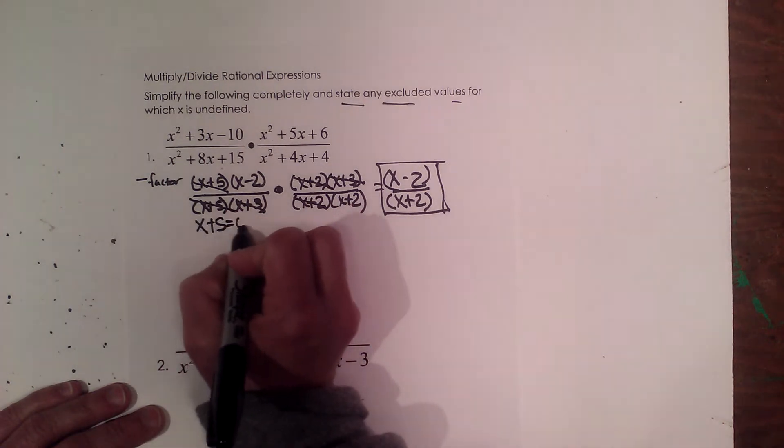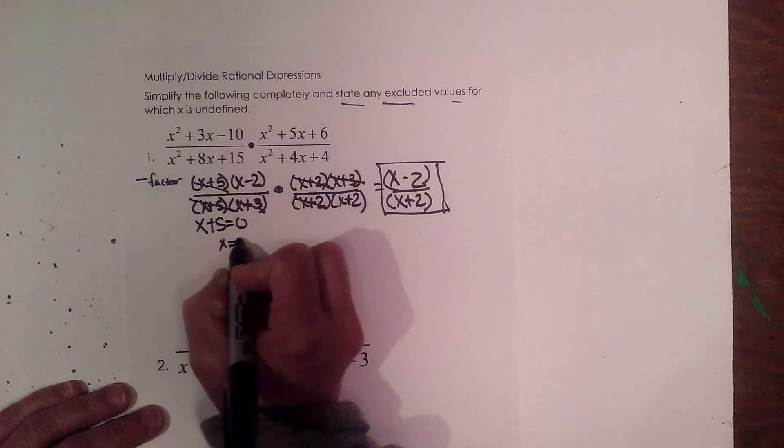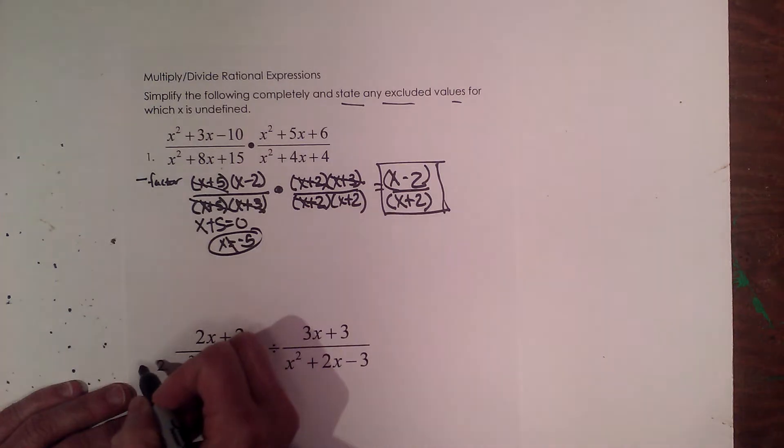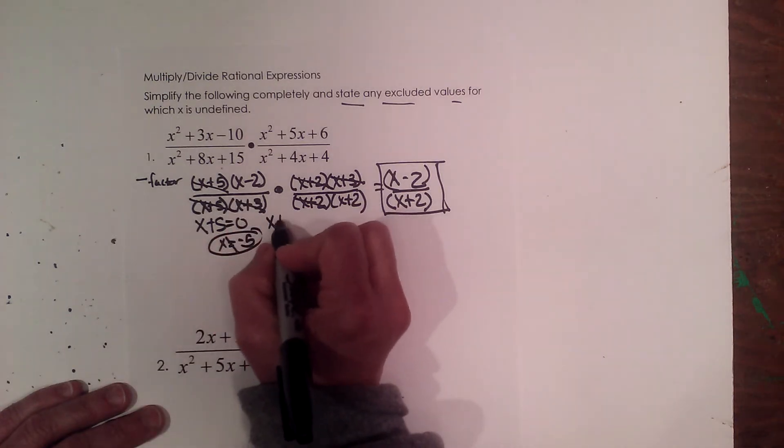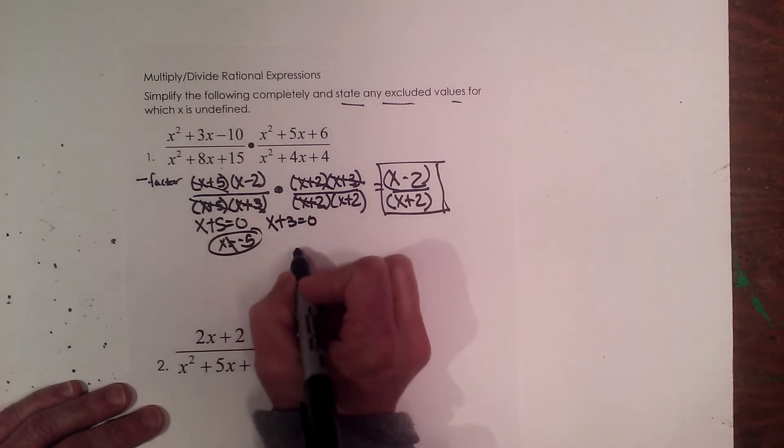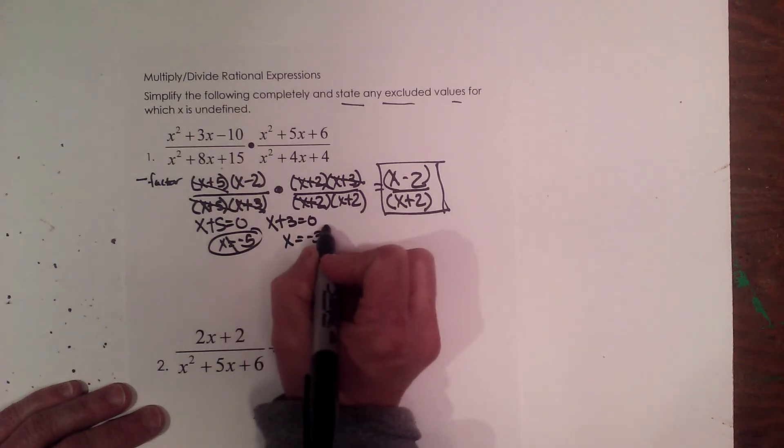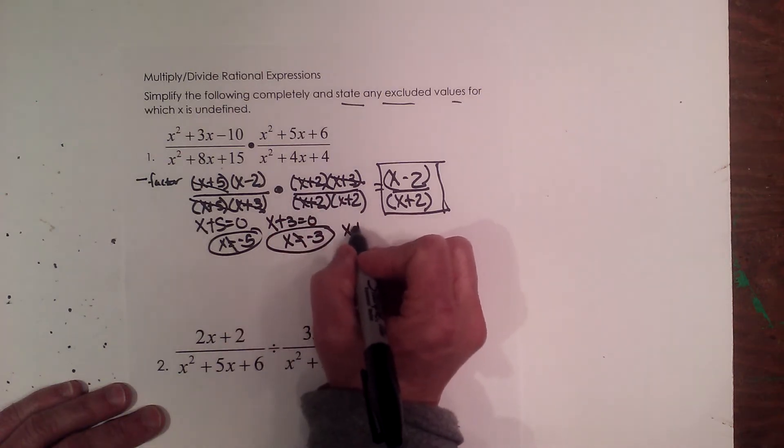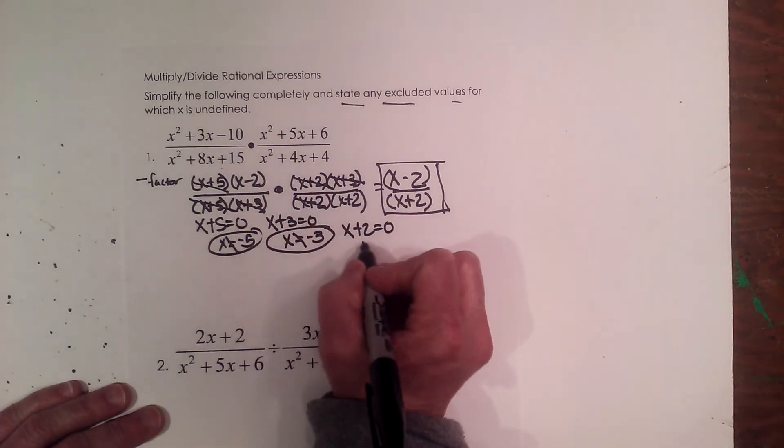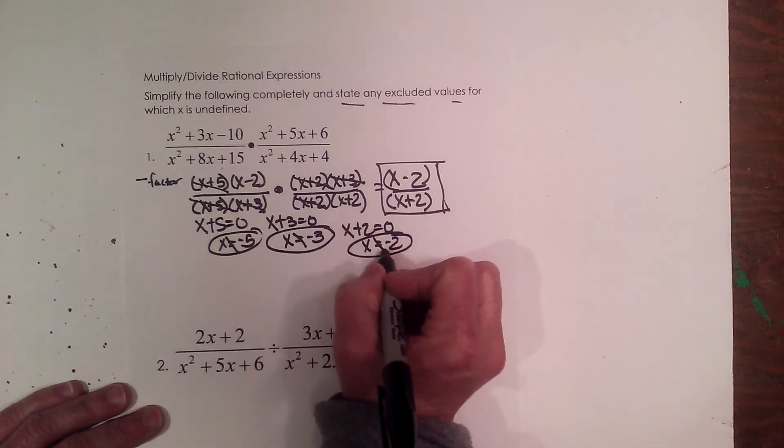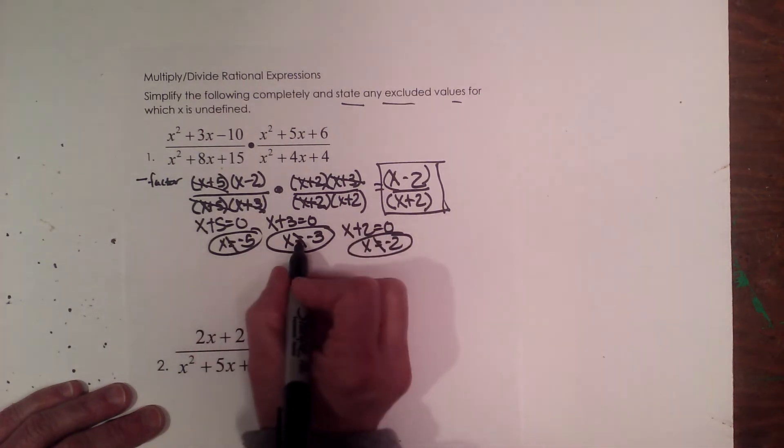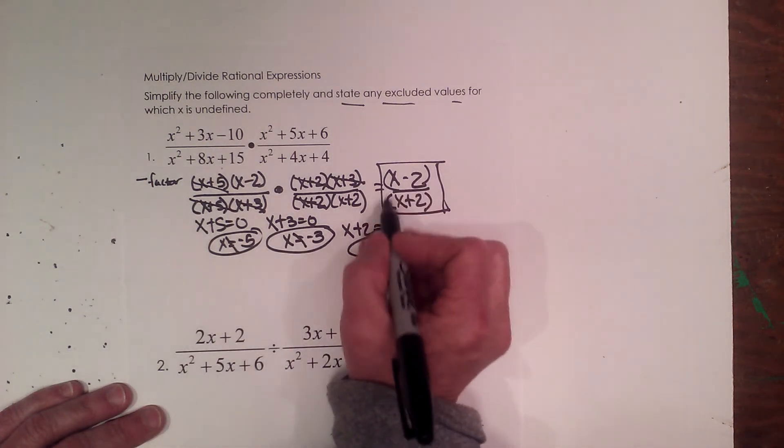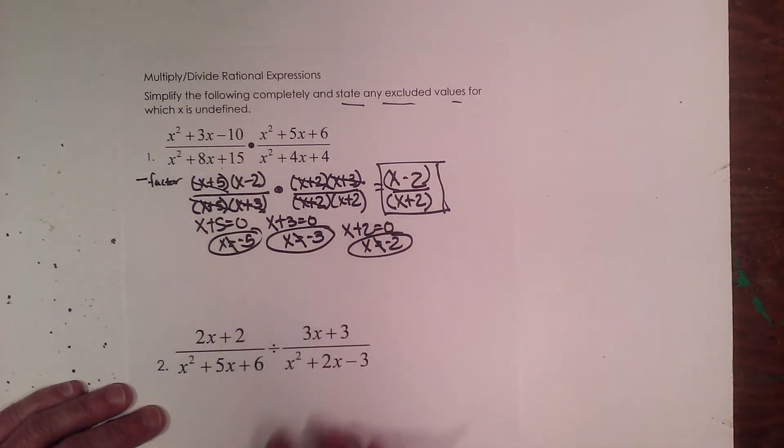So we have to look where these factors are equal to 0. So the first one is x plus 5. Where is x plus 5 equal to 0? Where x is negative 5. So that's an excluded value. In other words, x cannot be negative 5. The second one is x plus 3. That's my second factor. So my excluded value would be negative 3. So x cannot be negative 3. And my last one would be, where is x plus 2 equal to 0? Where x is negative 2. So x cannot be negative 2. So negative 2, negative 3, and negative 5 are my excluded values. And my final solution is x minus 2 over x plus 2.